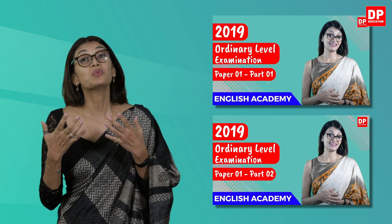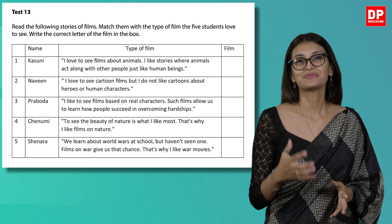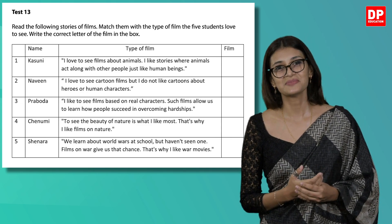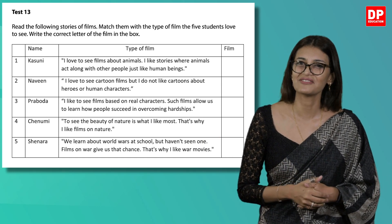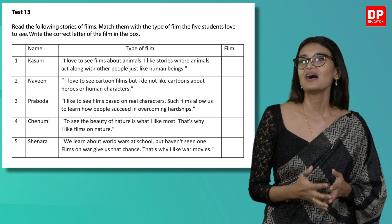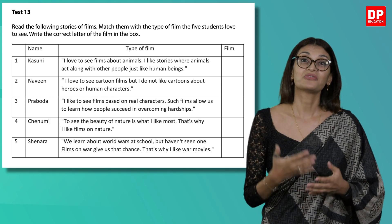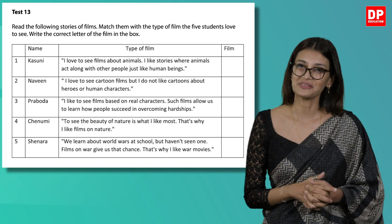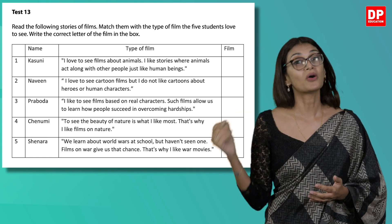The overall mark that you will get for this paper is 60. Let's start this session by looking at Test 13. You are asked to read the following stories of films and match them with the type of film the five students love to see. Write the correct letter of the film in the table given and the correct letter of the description in the box.